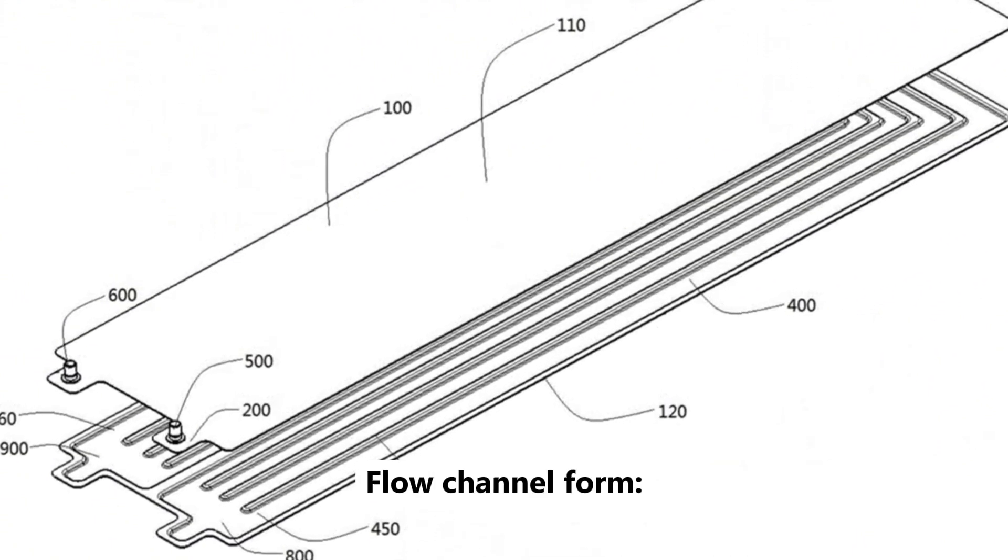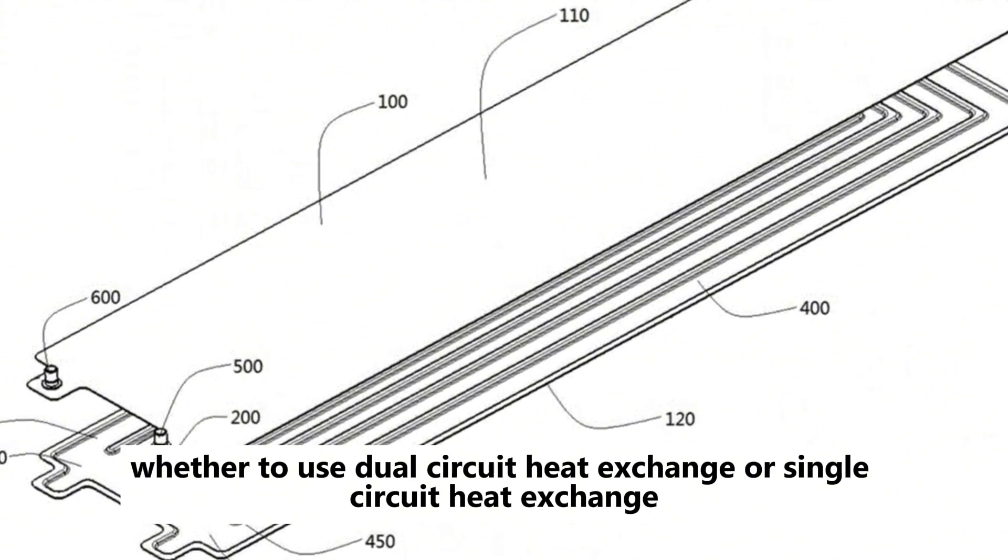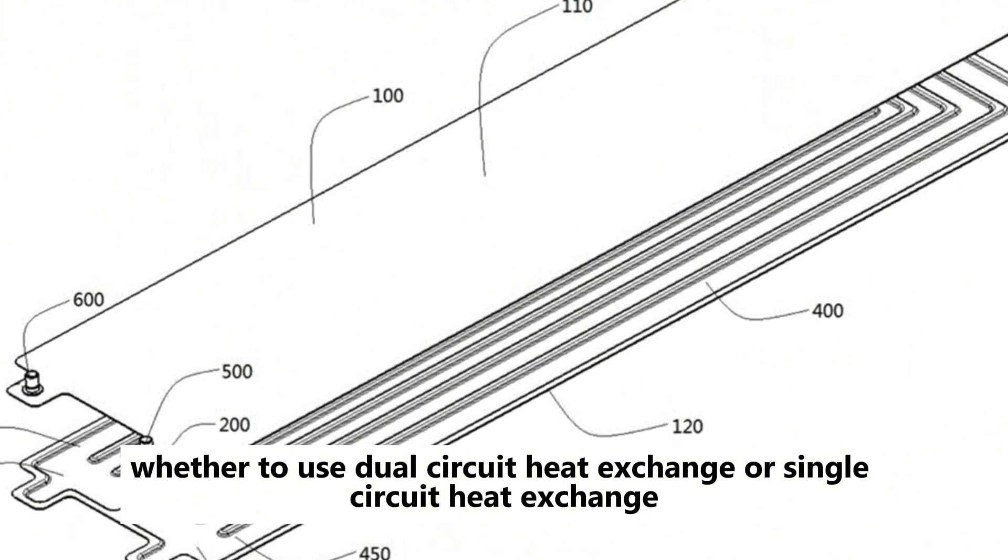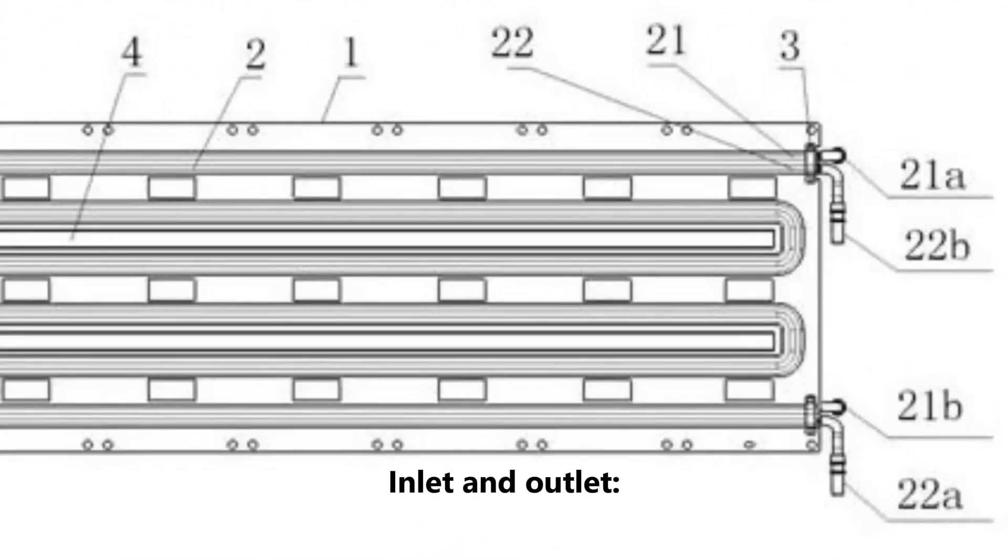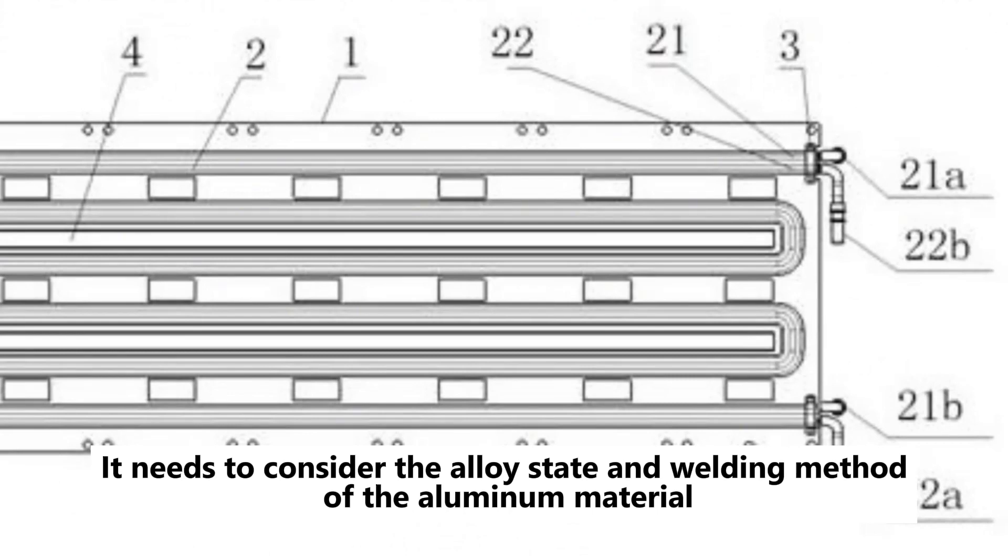4. Flow channel form. Whether to use dual-circuit heat exchange or single-circuit heat exchange. 5. Inlet and outlet. It needs to consider the alloy state and welding method of the aluminum material.